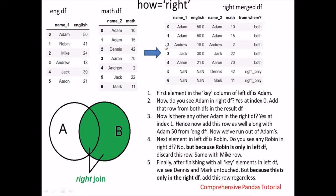Right join is basically complementary to left join. We find all common values and keep all values exclusive to B. Adam is common so Adam 50, Adam 10, Adam 50, Adam 15 — both rows showing they come from both. Robin and Mike are only in the left data frame, so we do not include them. Andrew, Jack, Aaron are present in both and are included. Dennis and Mark are only in the right, so we include them with NaN values in the left data frame columns. These were the four joins.